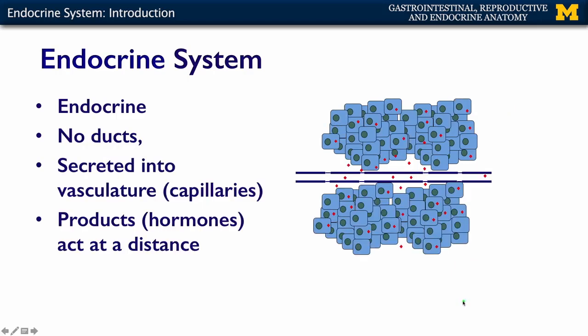Endocrine glands consist of a cuboidal epithelium that secretes into capillaries. Endocrine glands have many capillaries within them, and they secrete into these capillaries, which are fenestrated — meaning they have little windows that make them more open so hormones can get in. These capillary beds join the greater vascular system, which distributes those hormone products throughout the entire body. The hormones go absolutely everywhere, but only bind where appropriate.